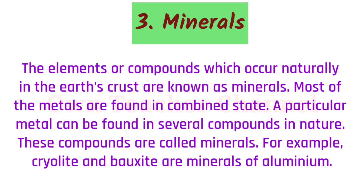Minerals: The elements or compounds which occur naturally in the earth's crust are known as minerals. Most metals are found in a combined state. A particular metal can be found in several compounds in nature. These compounds are called minerals. For example, cryolite and bauxite are minerals of aluminium.